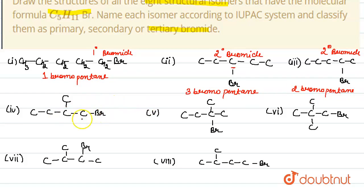Here we will name this compound as 2-methyl-1-bromo-butane, and here this bromine is primary bromide.